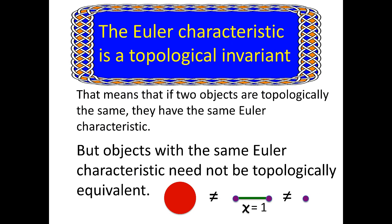What that tells us is that the Euler characteristic is not a perfect invariant. We can have objects with the same Euler characteristic that are not topologically equivalent. As another example, take a zero-dimensional point. I can't change a single point by pulling or stretching to make an infinite number of points. A line segment contains an infinite number of points, as does a two-dimensional disc. So there's no way to stretch a zero-dimensional point to become a line segment or a disc — they are all topologically different, but they all have the same Euler characteristic of one.